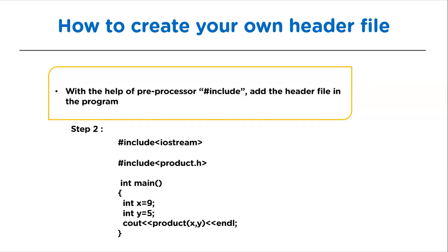Here #include will inform the compiler that a header file is added. As we can see in step 2, after the declaration of two integers we are calling the function product and passing the arguments x and y. After running this program we will get the output as 45, because 9 into 5 equals 45. We don't need to worry about writing the logic because we have already included this header file.